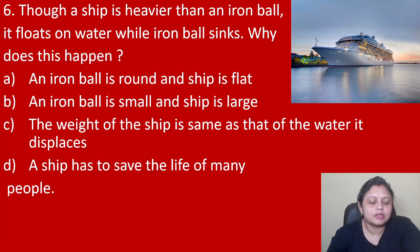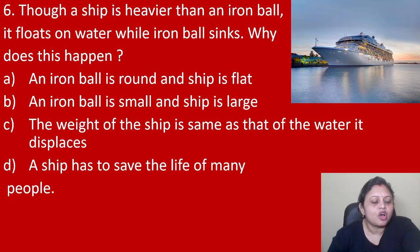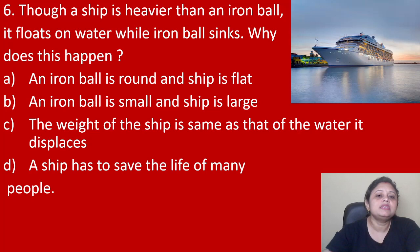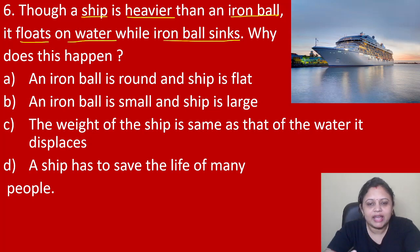Though a ship is heavier than an iron ball, it floats on water while the iron ball sinks. Why does this happen? Option A, an iron ball is round and a ship is flat. Option B, an iron ball is small and a ship is large. Option C, the weight of the ship is the same as that of the water it displaces. Option D, a ship has to save the lives of many people. We know a ship is heavier than an iron ball, but still the ship floats on water.